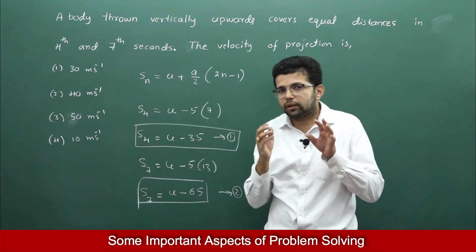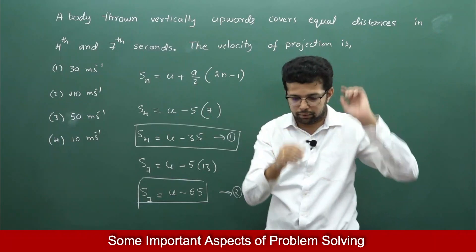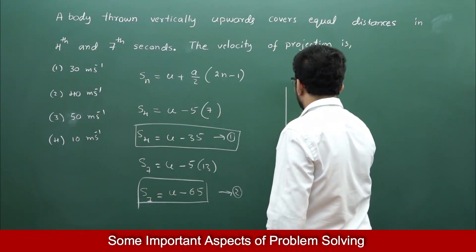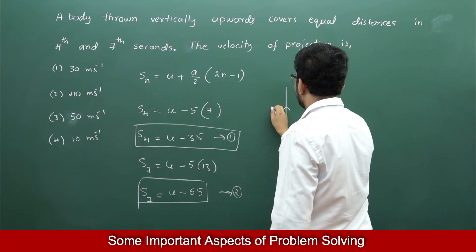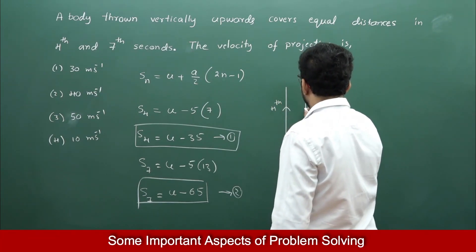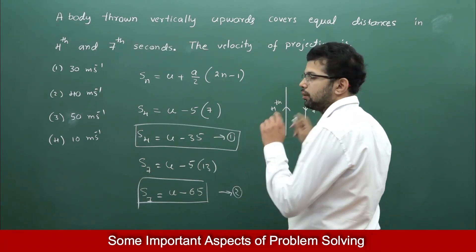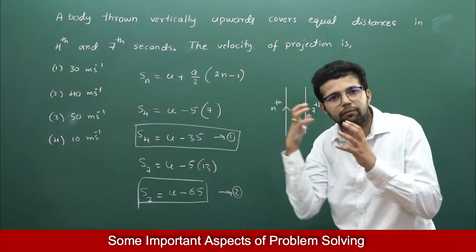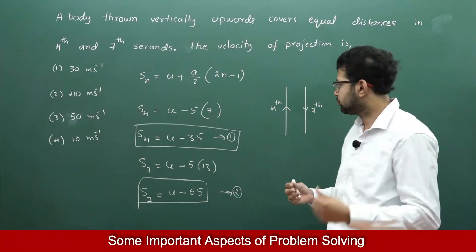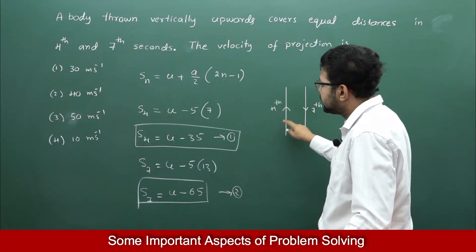So if the distance in the 4th second has to equal the distance in the 7th second, then during the 4th second the object must be going upwards, and during the 7th second the object must be coming downwards. This is very important. If this picture comes into your mind, you can solve this problem very easily using any formula. During the 4th second, the object is going upwards.